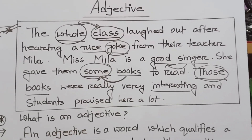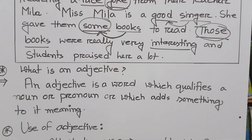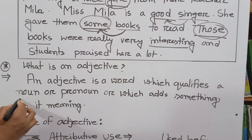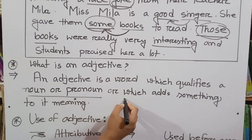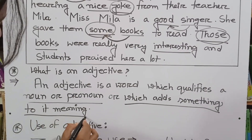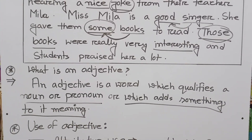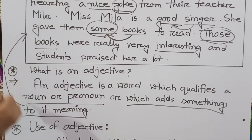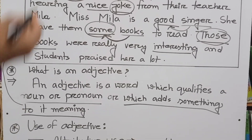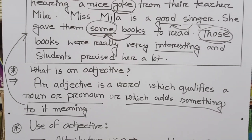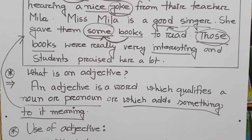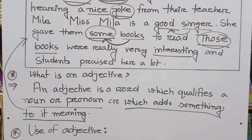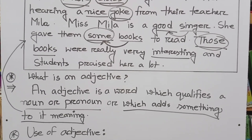So we can say: an adjective is a word which qualifies a noun or pronoun, or which adds something to its meaning. From the above discussion and from this definition, it is very clear what an adjective actually means. If you look at this and are attentive, you will find adjectives very easily.